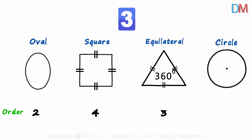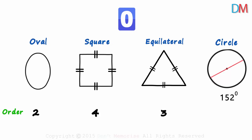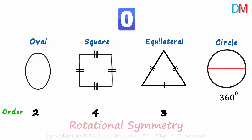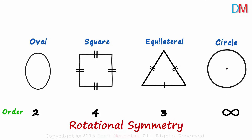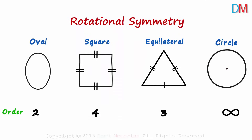And now we come to the circle. What do you think will be the answer here? No matter how we rotate the circle, it will always match the original shape. It will have rotational symmetry of order infinity. So remember, a shape has rotational symmetry if it looks exactly like the original shape a number of times when rotated about the center point by 360 degrees.